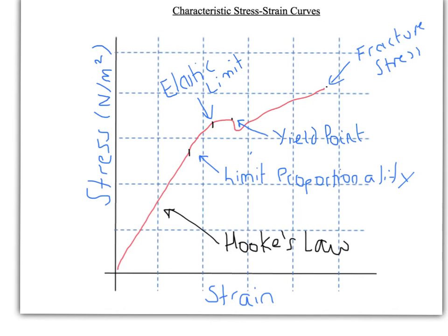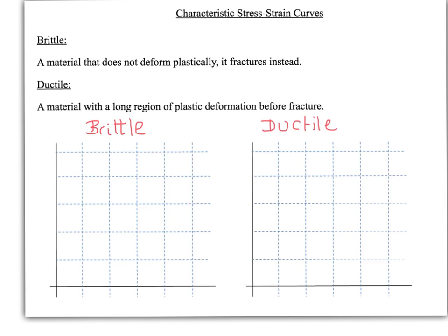So let's have a look at some for different types of materials, different material properties. There's a distinction to be made here between brittle materials, which are types of materials that don't deform plastically. They just fracture once you reach the yield point. And there are ductile materials which can go past the elastic limit for quite a long period of time.